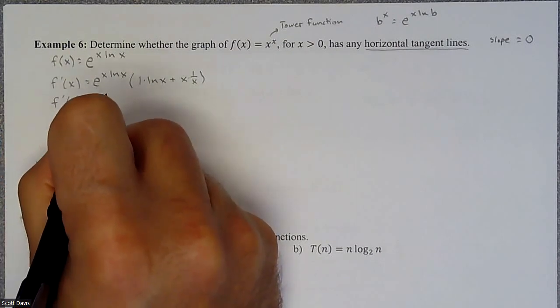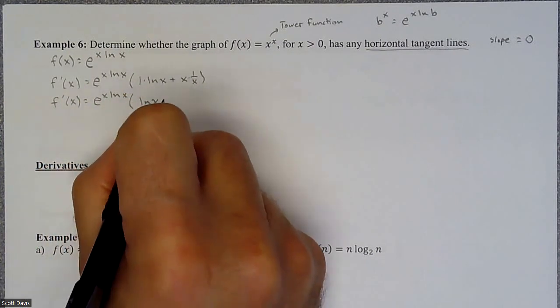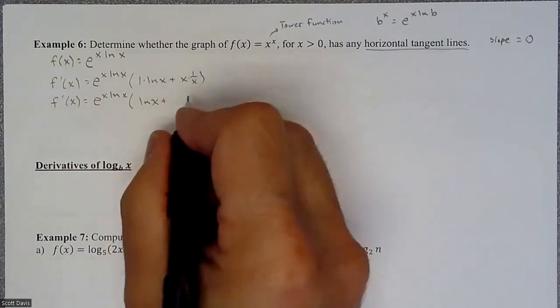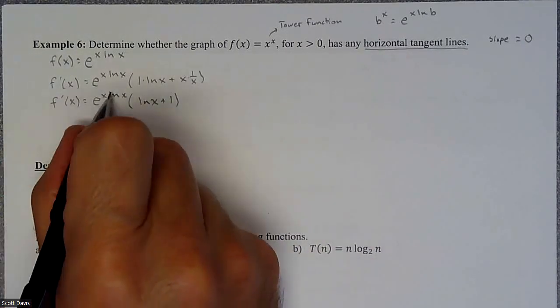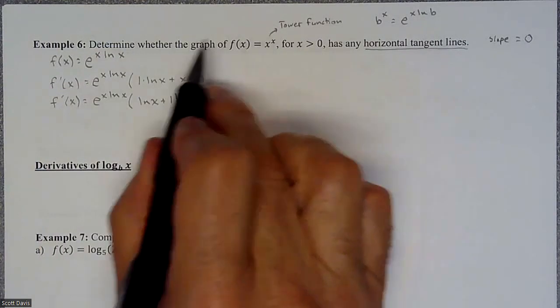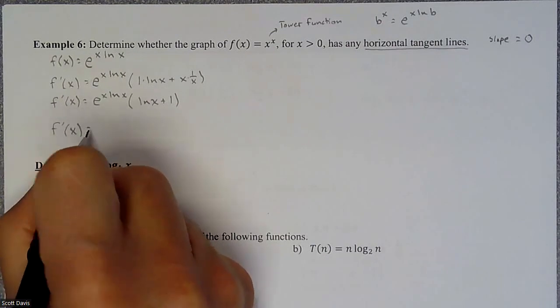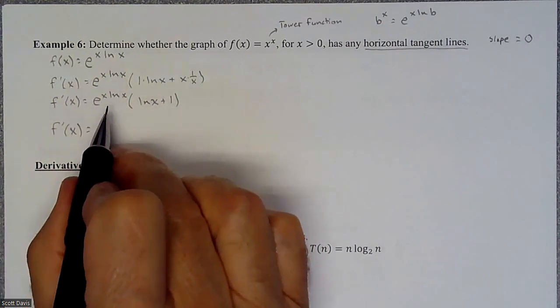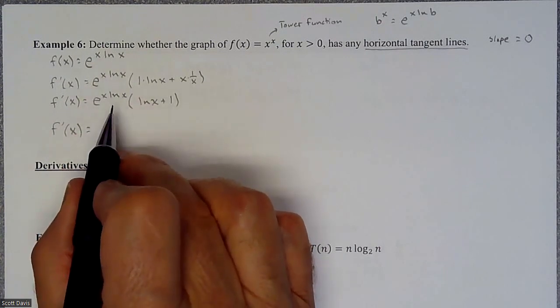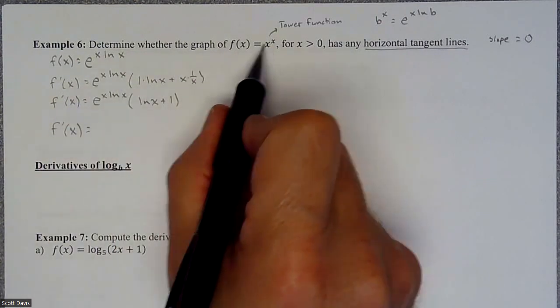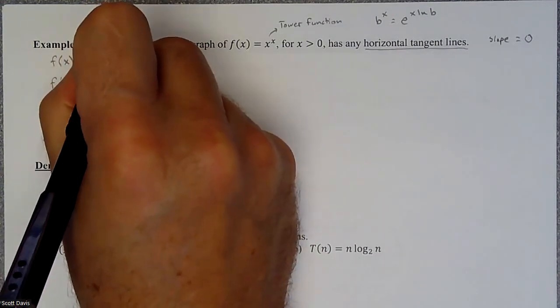So we have e^(x ln x), and this becomes the natural log of x. And then you have x times one over x, so that's going to simplify out and that's just going to become a one. Last little bit is anytime we rewrite this tower function, the very last step is pulling it back into its original form.